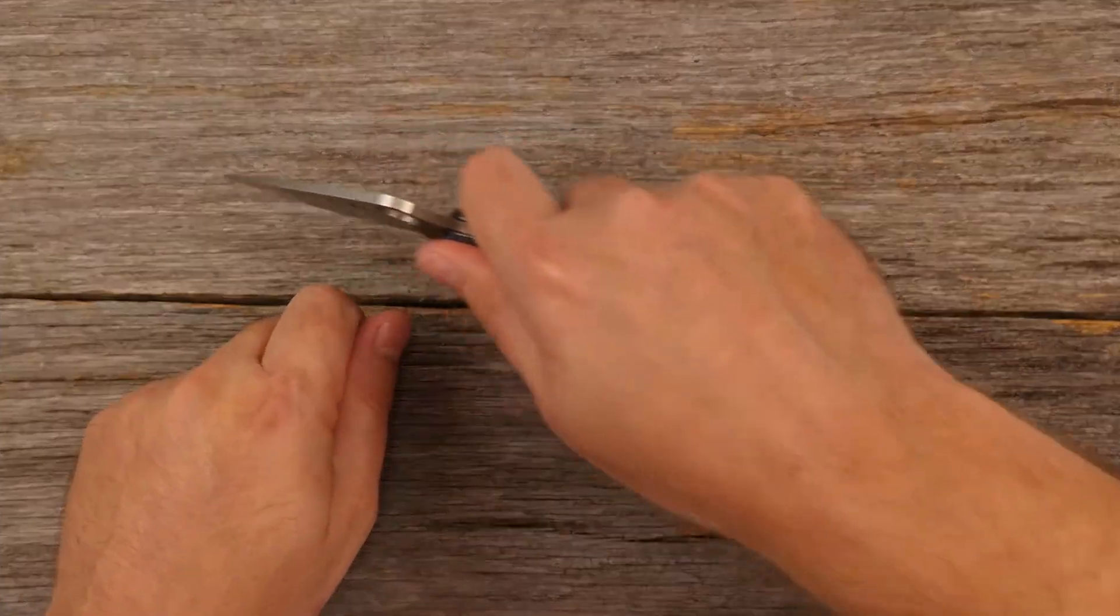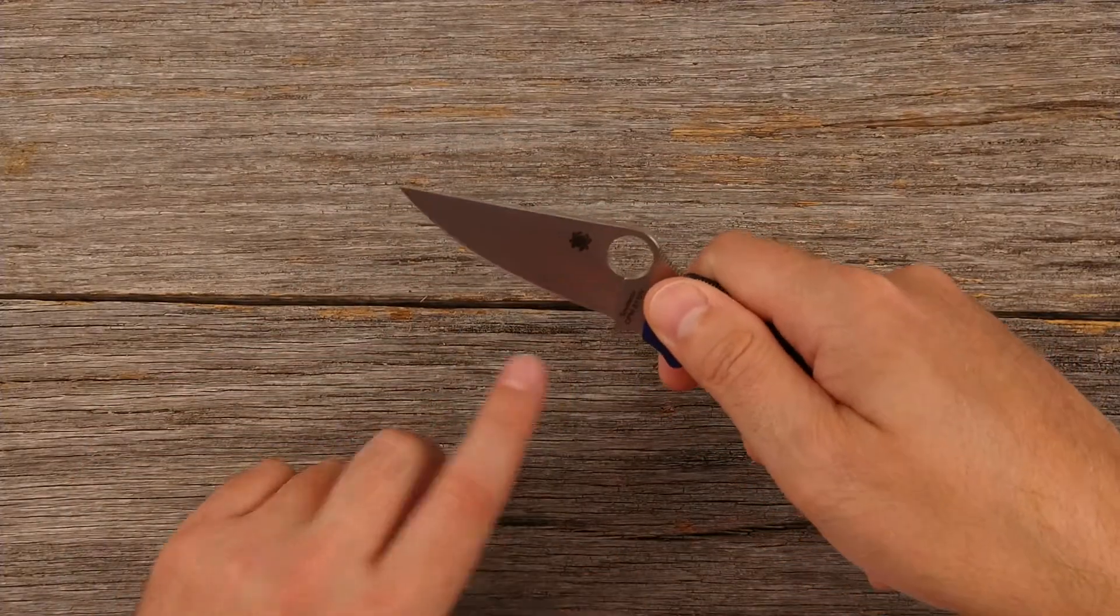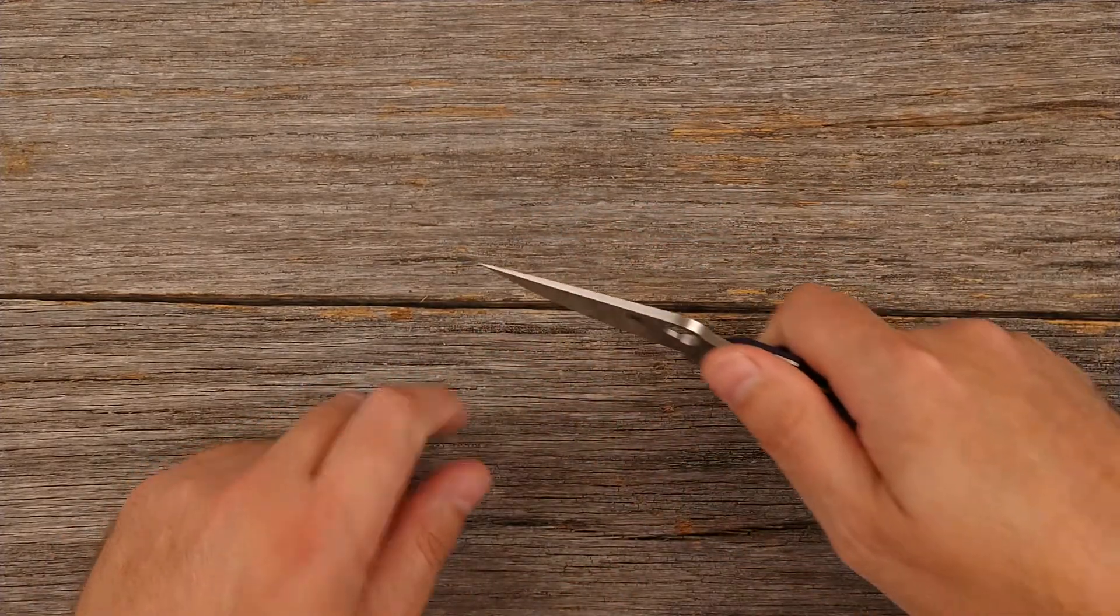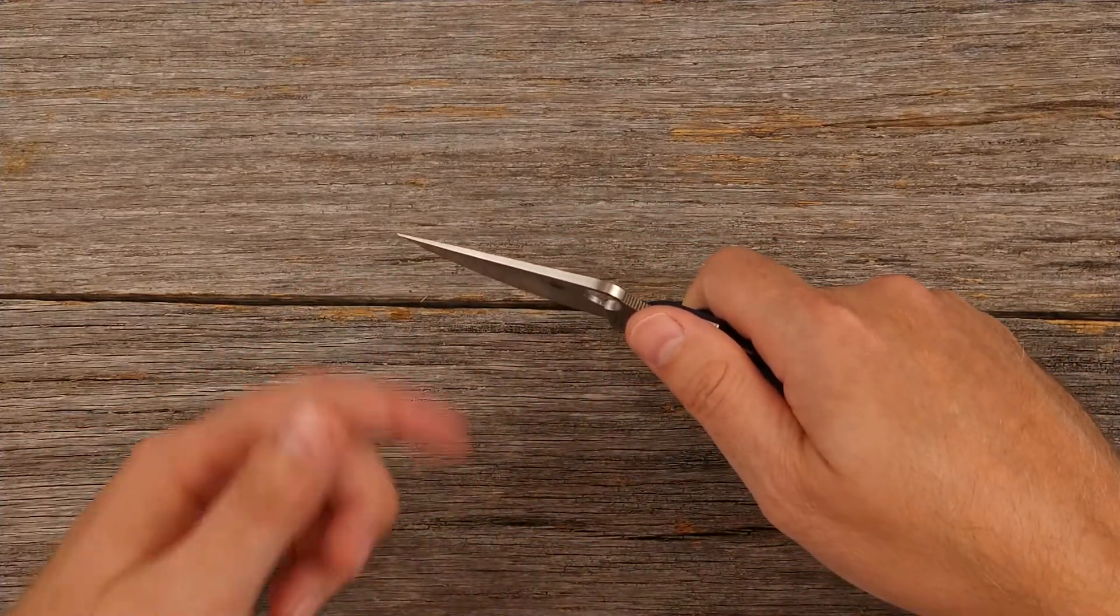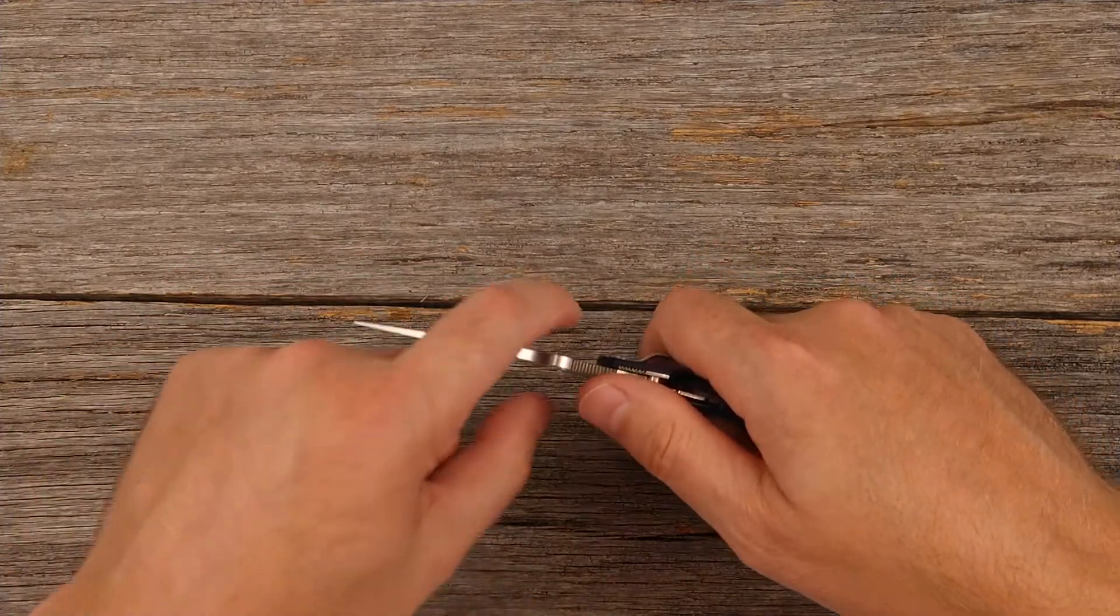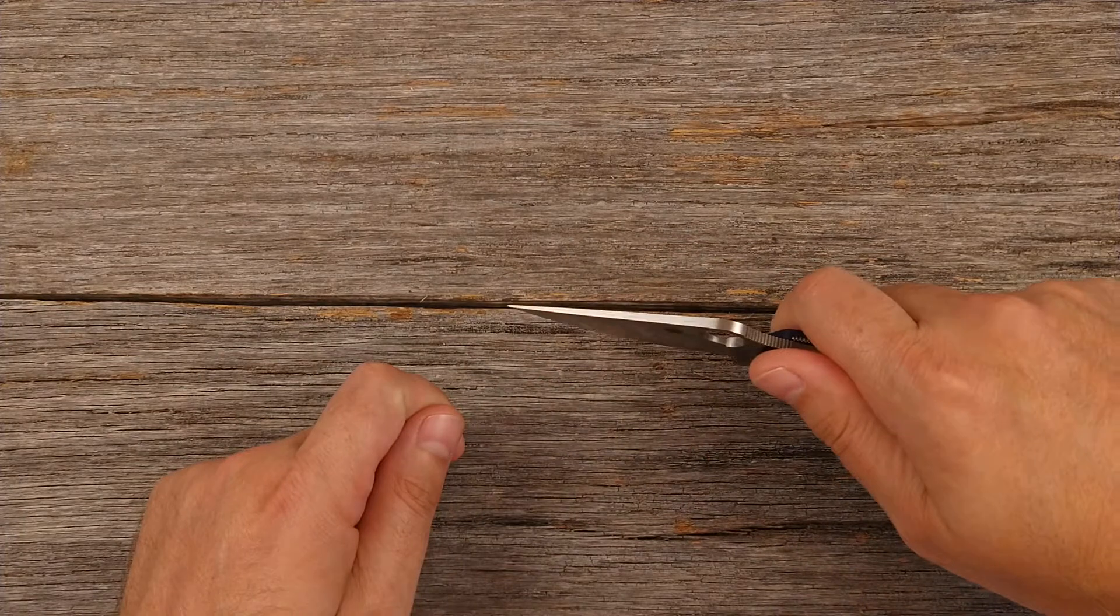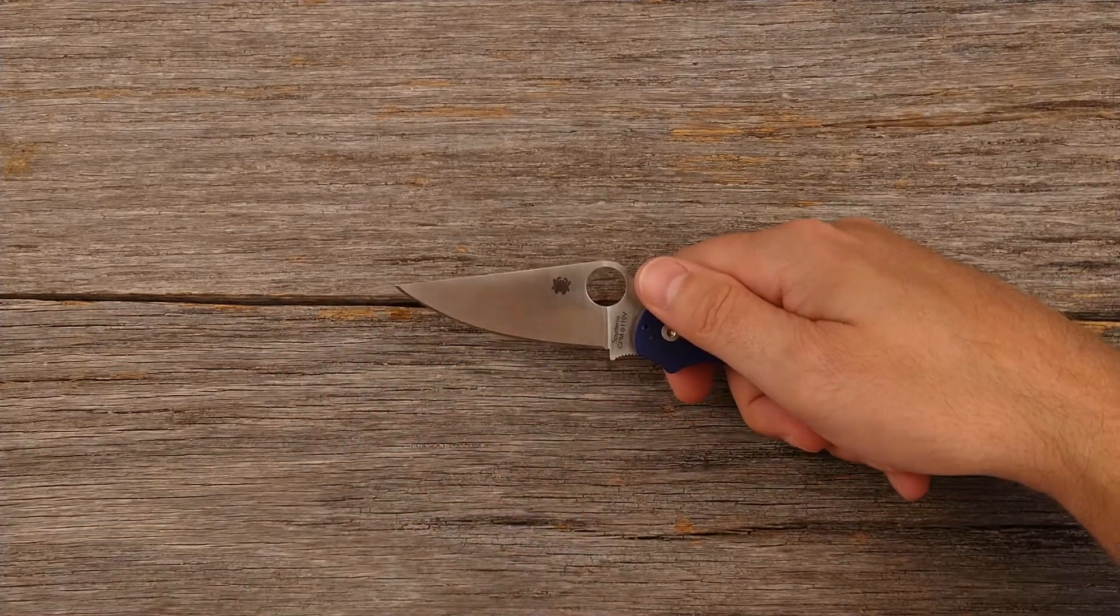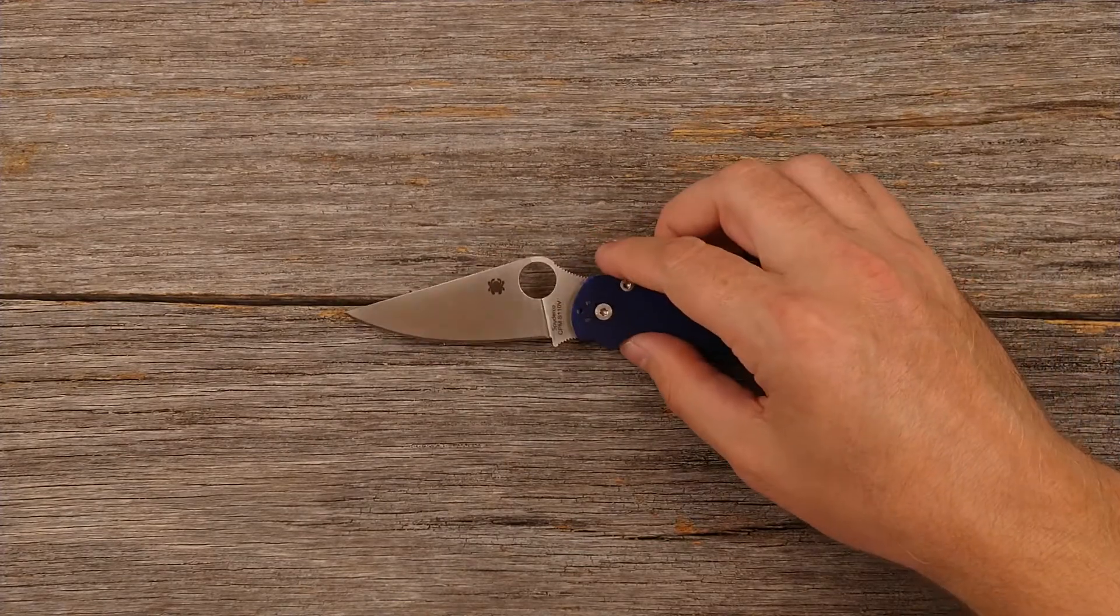But the way that thing works is you pull it through a channel and the spinning belt actually puts the edge on it. Well, as it's grinding on the knife edge, it's kicking up that metal, those metal shavings or grindings and they get in that track. And so as you're pulling it through the track, that metal dust is actually scratching the blade all up.